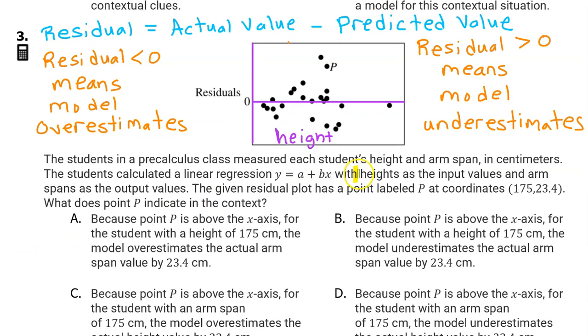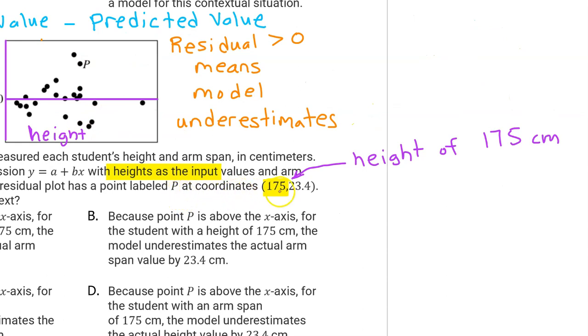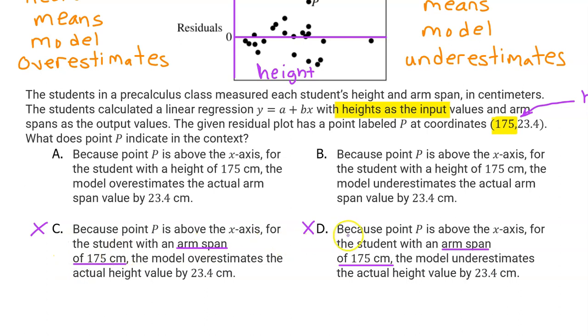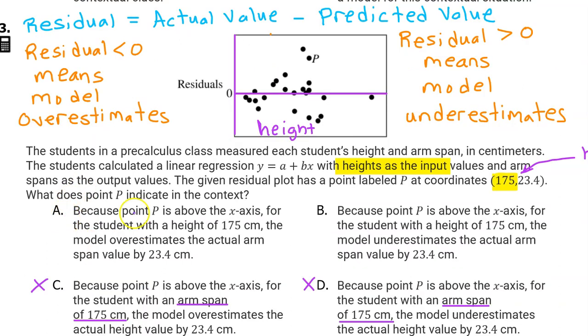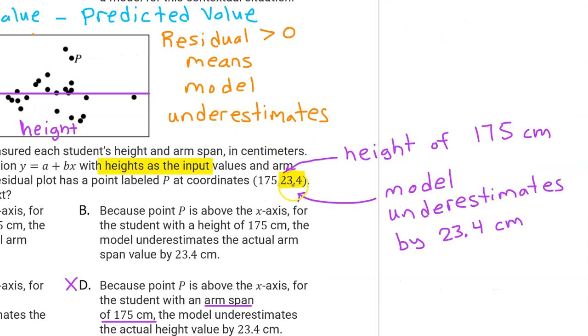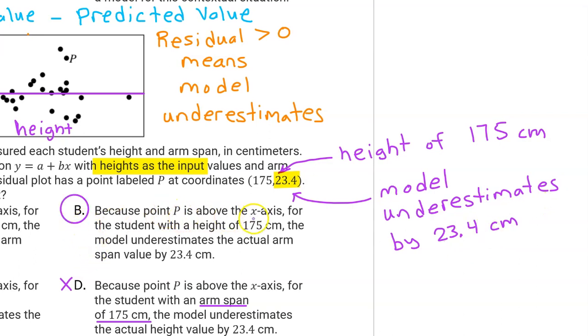A residual plot has the same input values as the regression model. In this case, height is the input, so we will put height on the horizontal axis of the residual plot. So looking at the residual point P, the 175 means that the student has a height of 175 centimeters. We can eliminate options C and D, which speak of an arm span of 175 centimeters. It should be height. To choose between option A and B, just remember that a negative residual means that the model overestimates, and a positive residual means that the model underestimates. This positive residual means that the model underestimates by 23.4 centimeters. We have been describing answer B.